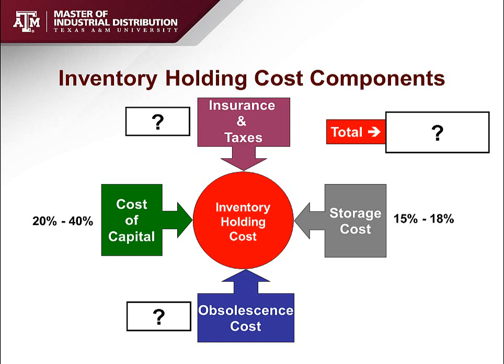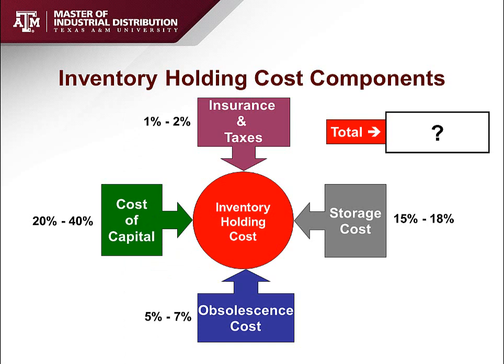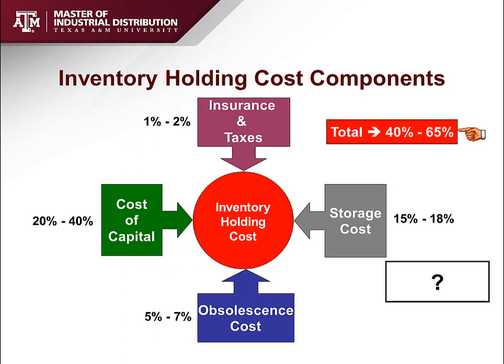The second component is storage cost, estimated to be between 15 and 18 percent in the U.S. Obsolescence cost is five to seven percent, and insurance and taxes are one to two percent. When you add up those numbers, the overall inventory holding rate comes to somewhere between 40 and 65 percent, which means you need to be very careful about inventories because they are expensive.